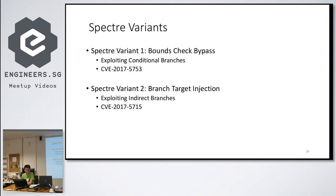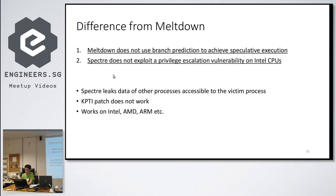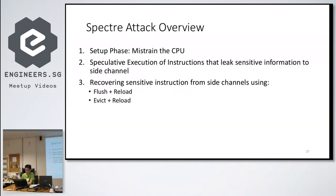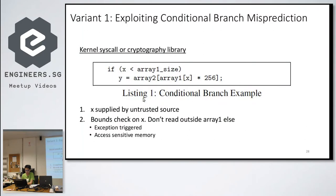Now for Spectre: it has two variants. The key differences are that Meltdown does not use branch prediction but Spectre does, and Spectre does not use this privilege escalation vulnerability. Because Spectre is not targeting kernel memory, the KPTI patch does not work for it. The idea is to leak memory of other processes. They have three steps: mistrain the CPU so the branch predictor thinks the next step is going one way, then suddenly do something different, and the branch predictor continues executing speculatively until it realizes too late that it shouldn't have taken that branch.